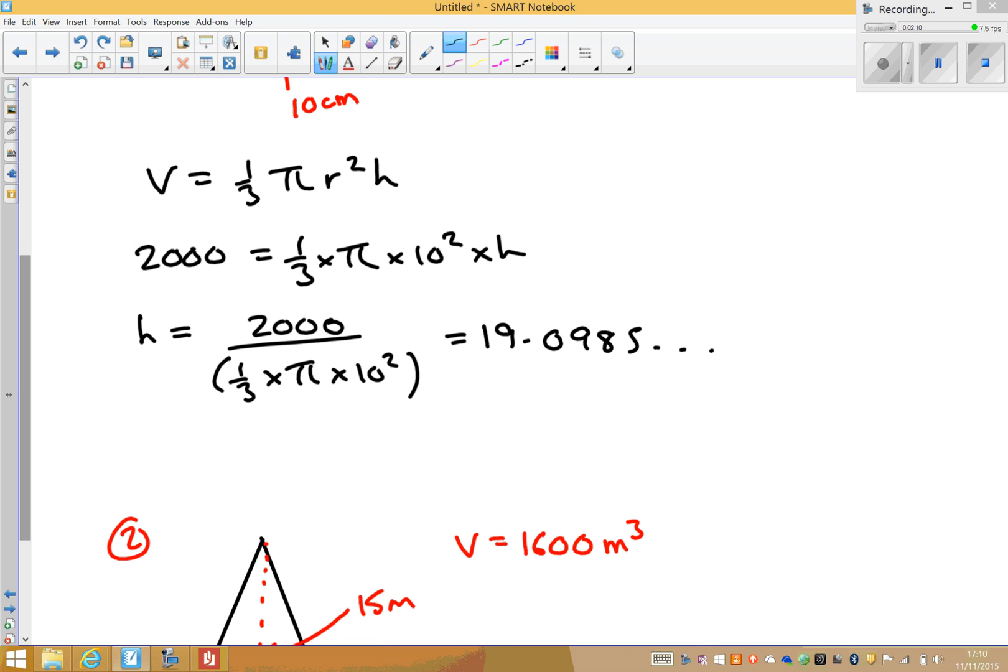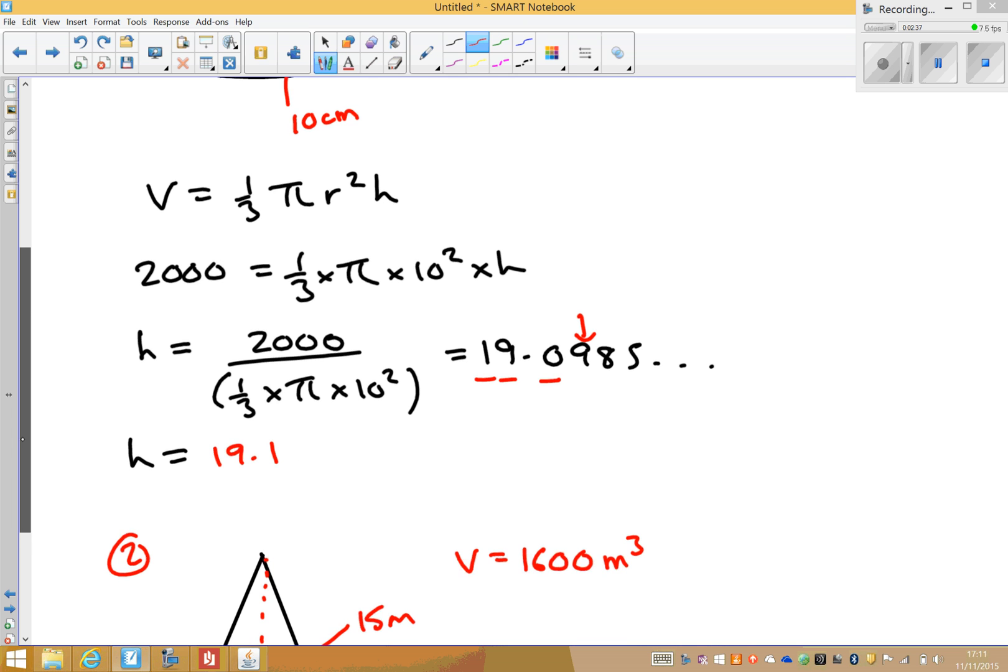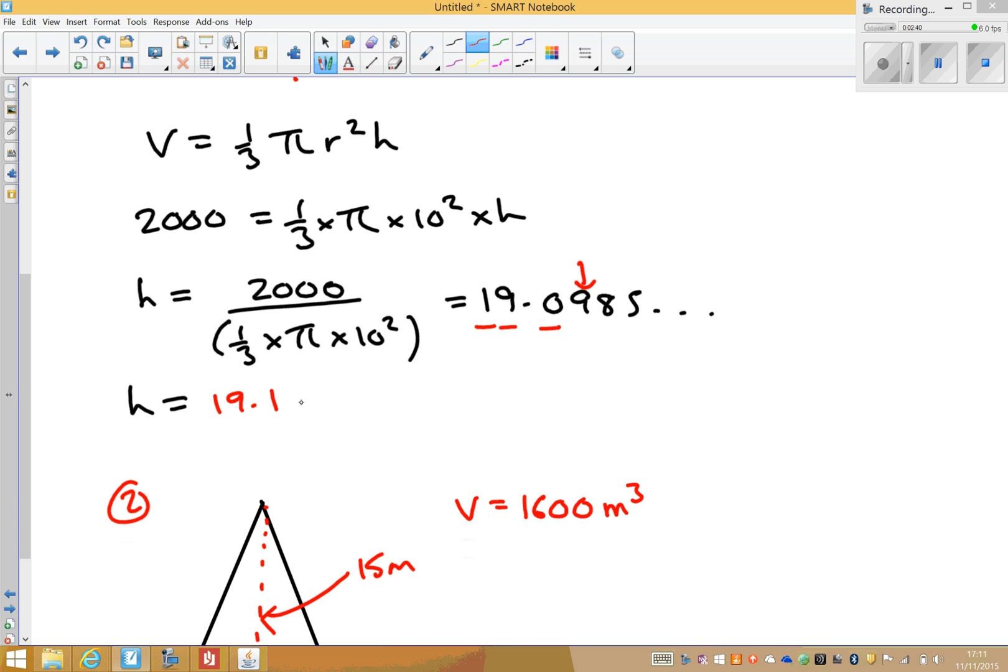Now, quite often, the question will ask you for three significant figures. So in this particular question, there's my first significant figure, second, third, I need to look at this 9 to decide what happens. Will this zero stay as a zero or round up to a 1? In this case, because the 9 is greater than 5, I'll round up to a 1. So my height will be 19.1, and remember it's a height, so the unit is just in centimeters.